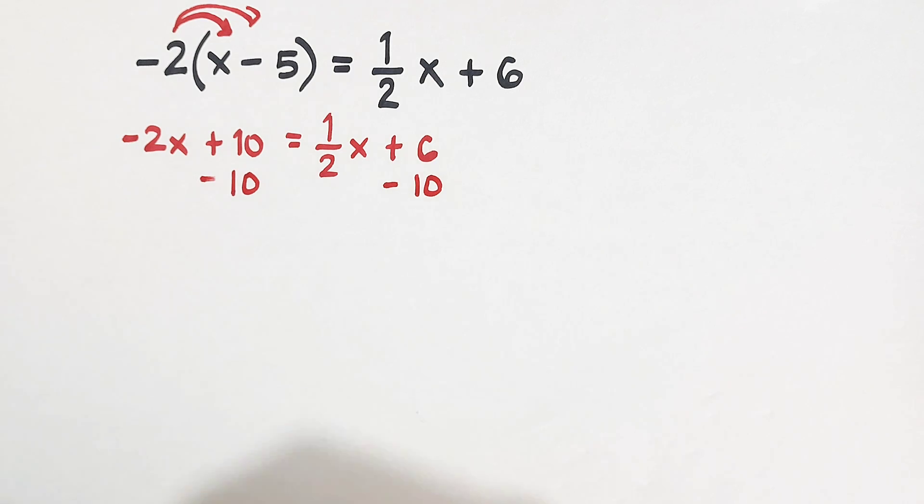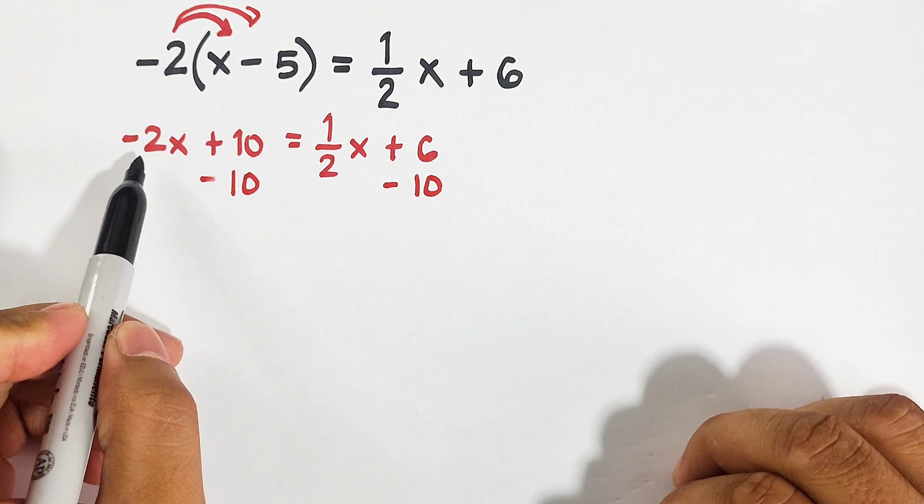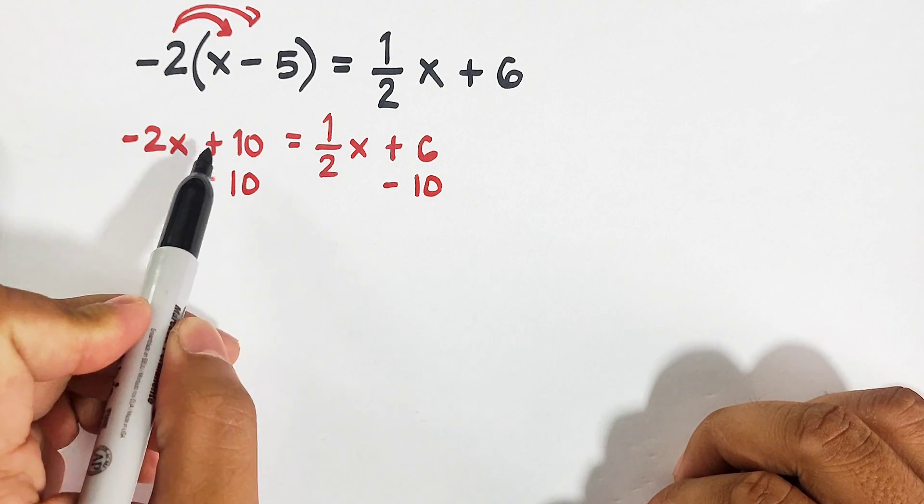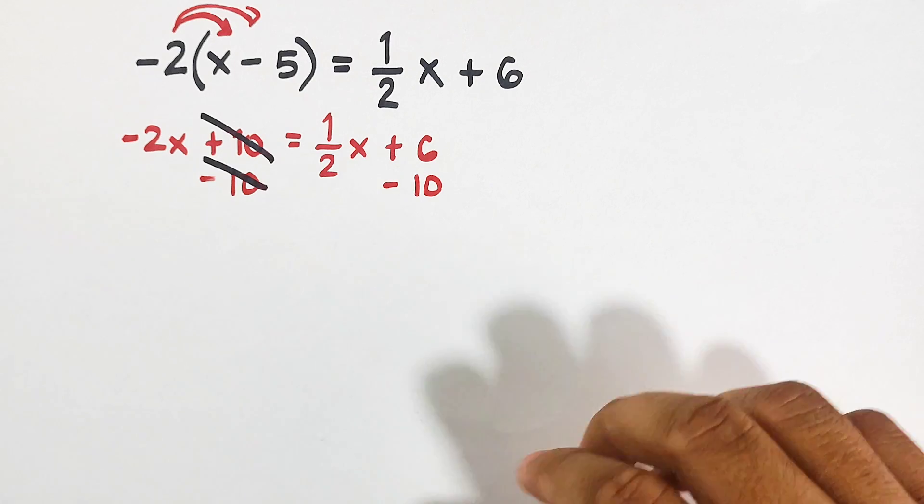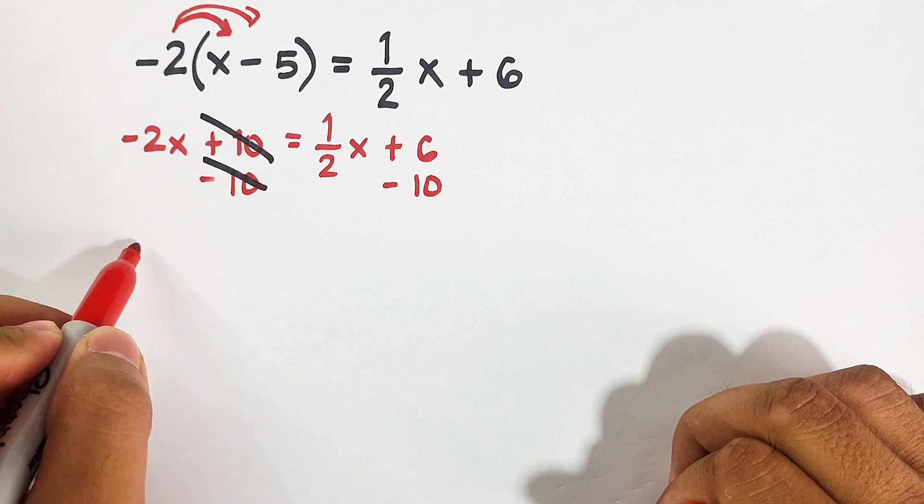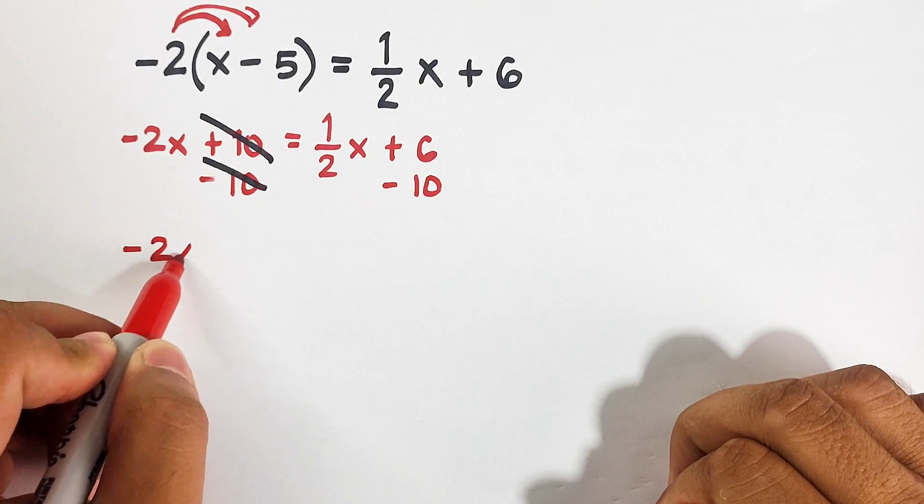So here on this part, as you can see, what we have now is negative 2x plus 10 minus 10. This is 0. Then as you can see, what we have here on the left side is only negative 2x.